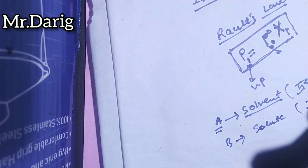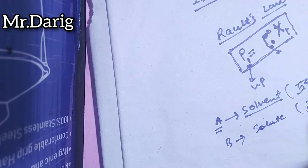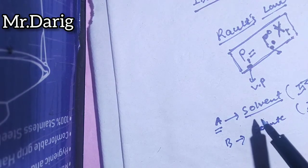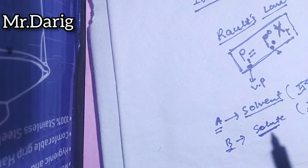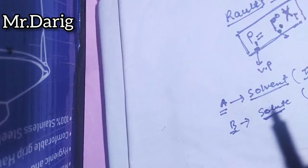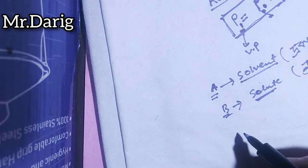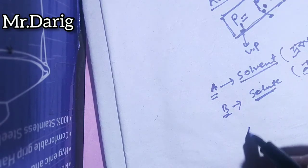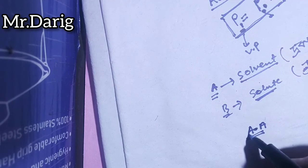Solvent is denoted by A, and I denote the solute by B. When I put a solvent in, and I put a solute in, I think it's very interesting. The ideal solution involves A and B intermolecular force of attraction.